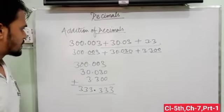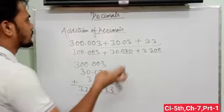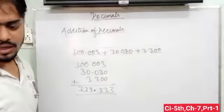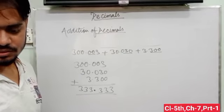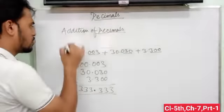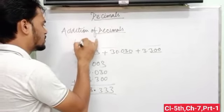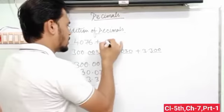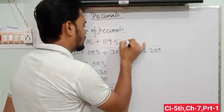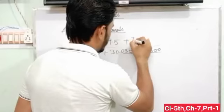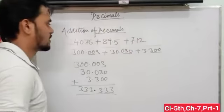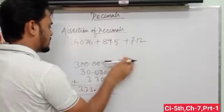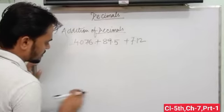Let's take another example. I have a question: 24.076 plus 89.5 plus 7.12. We will follow same steps as this one.